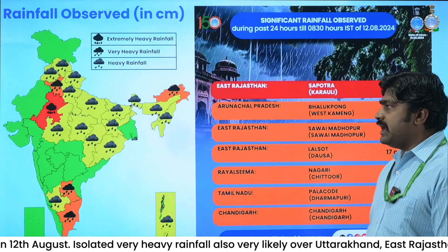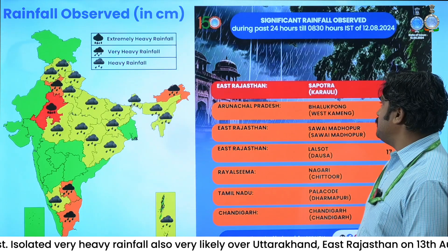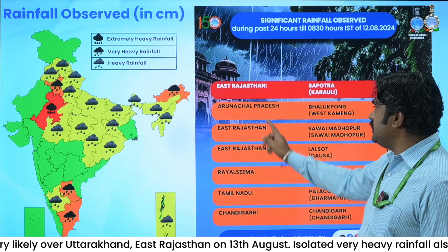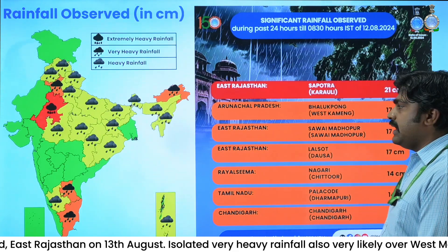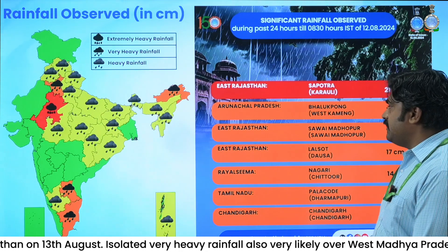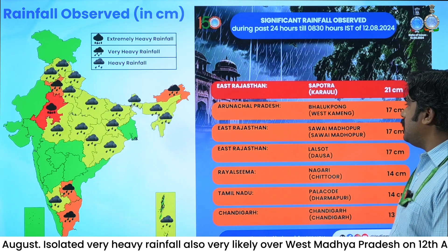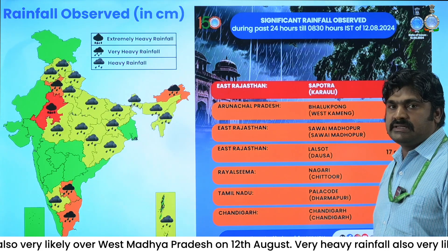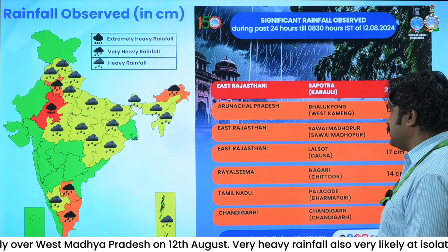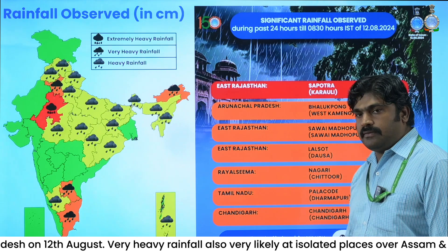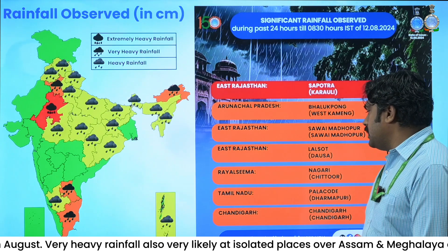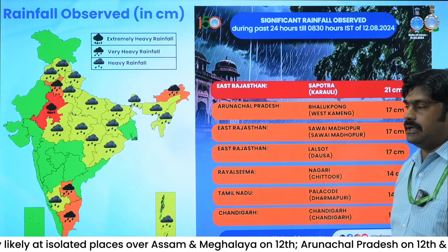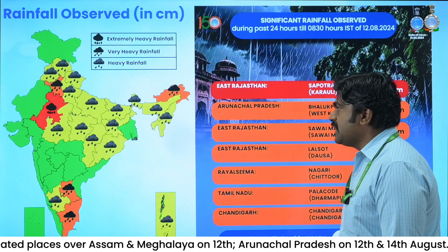Extremely heavy rainfall was observed over east Rajasthan, up to 21 centimeters, shown in red. Heavy to very heavy rainfall was observed over Arunachal Pradesh, east Rajasthan up to 17 centimeters, Mizoram up to 14 centimeters, Tamil Nadu 14 centimeters, and Chandigarh 13 centimeters.